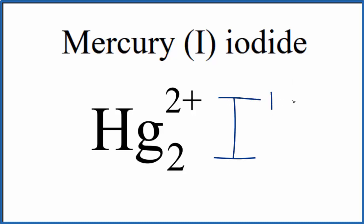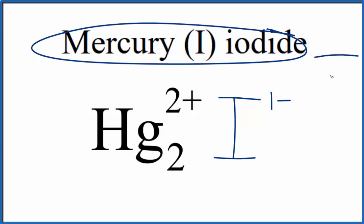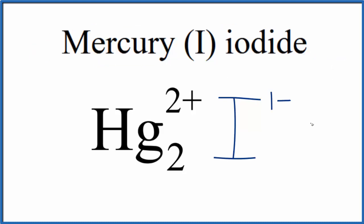It has a one minus ionic charge. Since mercury iodide is neutral, doesn't have ion written after it, that means these charges need to balance out, giving us a net charge of zero. If I had two iodide ions, two times one minus, that would balance out this two minus, giving us a net charge of zero.